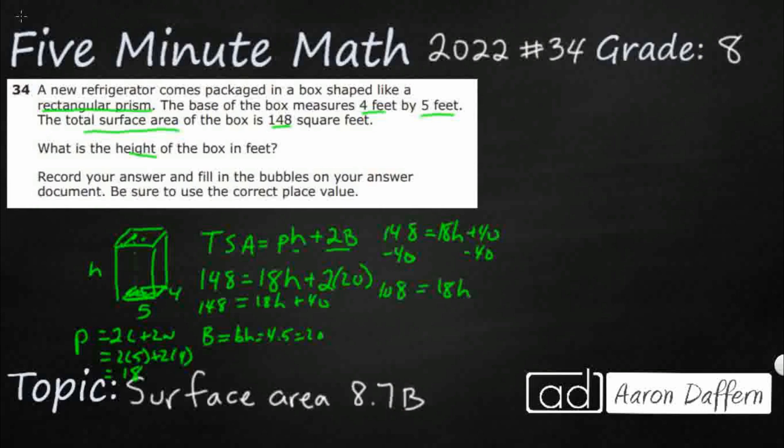Now this is looking a little bit more like what we're used to, okay? So we're going to now divide both sides by 18. And guess what we get? We get a nice round, even 6.